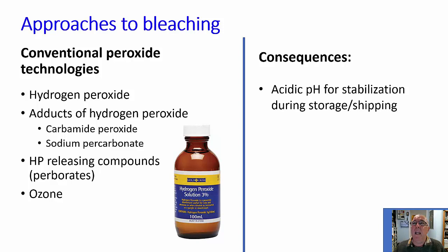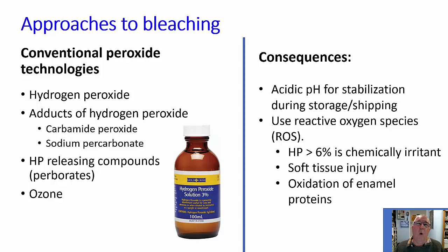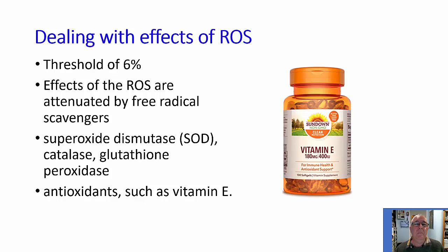For example, hydrogen peroxide is normally shipped at an acidic pH to keep it nice and stable during storage and shipping. All of the hydrogen peroxide family use reactive oxygen species, and our body has got defense systems which can tolerate exposure to these reactive oxygen species, but only up to a certain threshold, which happens to be 6%. This is why the ACCC and the poison schedule in Australia sets a boundary at 6% for products that can be dispensed by people who are not registered dental practitioners.